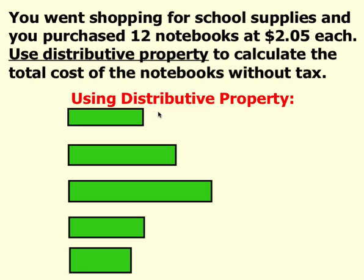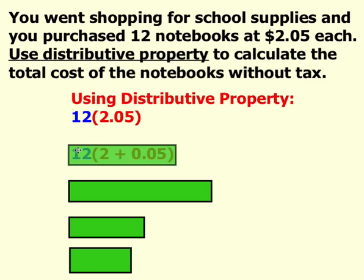Many of you are probably thinking to multiply 12 with $2.05. Think about how you can separate $2.05 as the sum of two different numbers. Hopefully, you found it as a sum of 2 and 0.05.